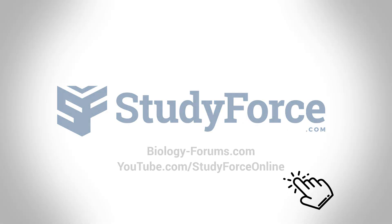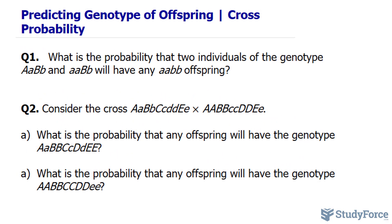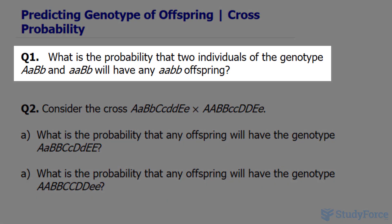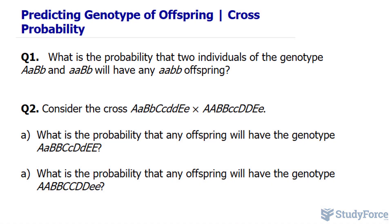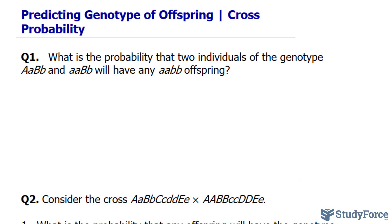In this lesson, I'll show you how to predict the genotype of an offspring given what we know about probability. The question reads: what is the probability that two individuals of the genotype capital A little a, capital B little b, and little a little a, capital B little b, will have an offspring that has this particular genotype? We start by looking at the genotypes of the parents — this is the first parent and that's the second parent.